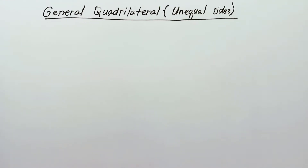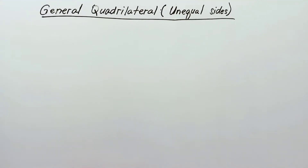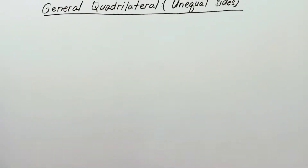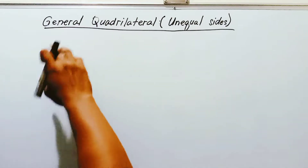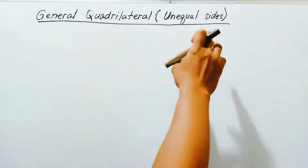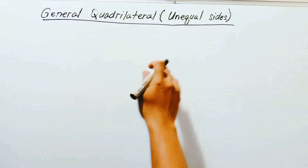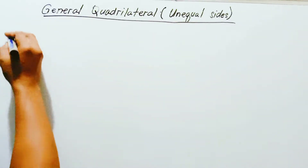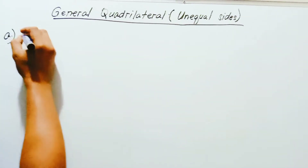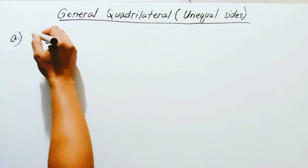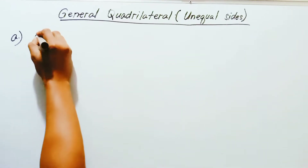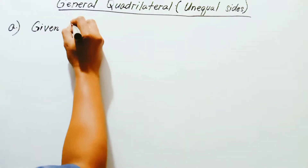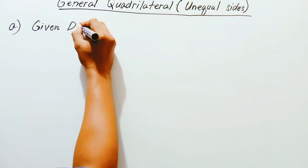Last time we studied different types of quadrilateral. At this time, it will be a general quadrilateral but all the sides are unequal. The first property will be given diagonals — given the diagonals but all the sides are unequal.